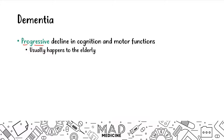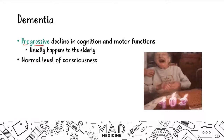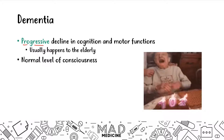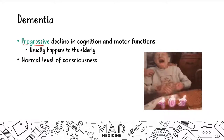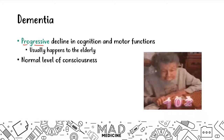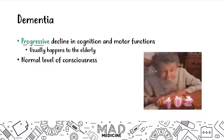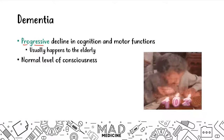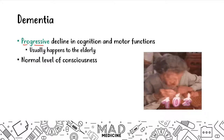In dementia, one thing to realize is that a patient is going to have normal levels of consciousness. The reason this is important is because in delirium, patients do not have normal levels of consciousness — they have a waxing and waning level of consciousness. Dementia patients are going to be alert and oriented for the most part, though perhaps less oriented as they progress in the disease.